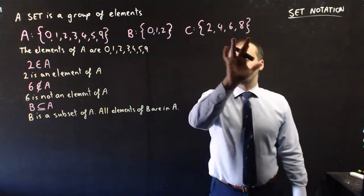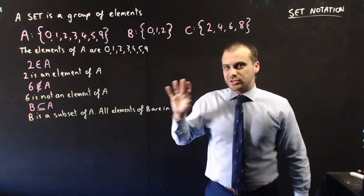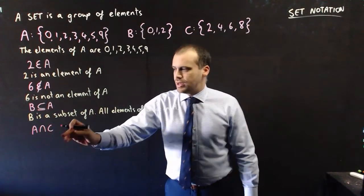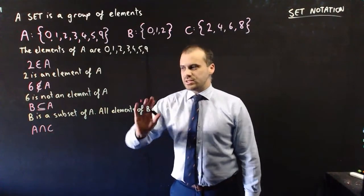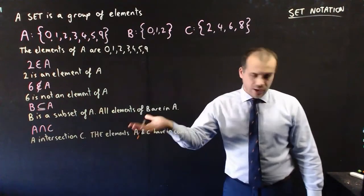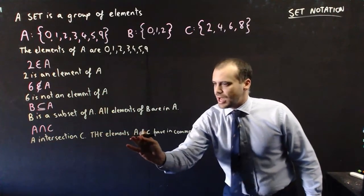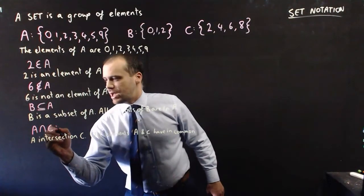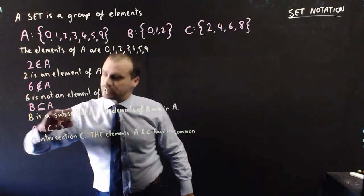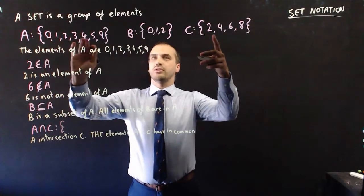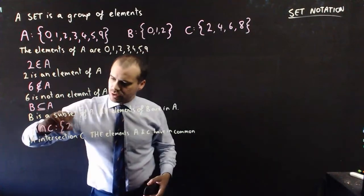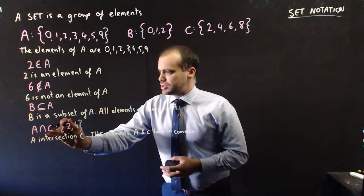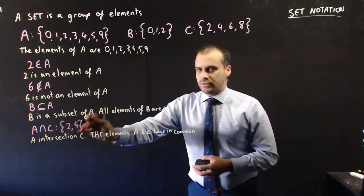For my next one, I'm going to add in this third set, C. So we have A intersection C — this upside down U symbol is the word 'intersection.' A intersection C just means the elements that A and C have in common. What are the elements that A and C have in common? Well, 2 and 4. So the set A intersection C is made up of the elements 2 and 4.